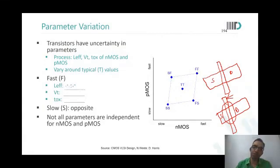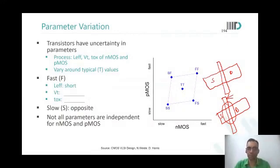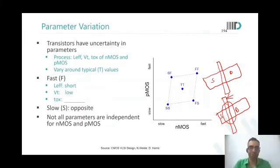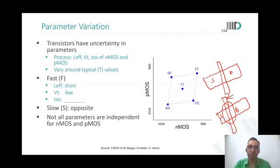How should Vt change to get a fast device? Should Vt reduce or increase? It should reduce, because the (Vgs - Vt) term increases and therefore current increases. What about Tox? Tox should also reduce, because reducing Tox increases Cox, which leads to more current.